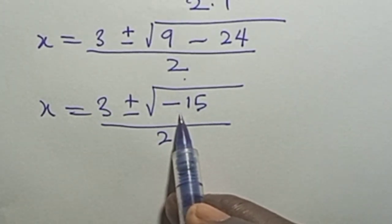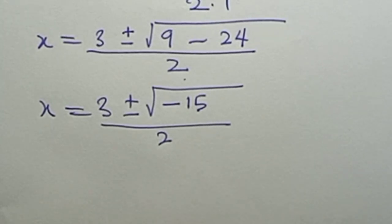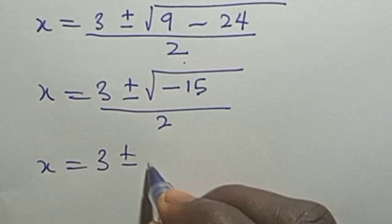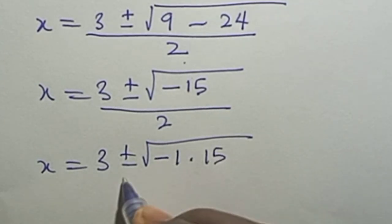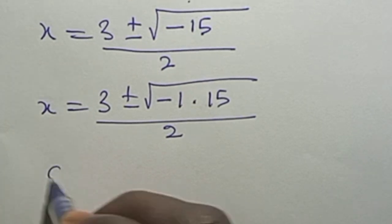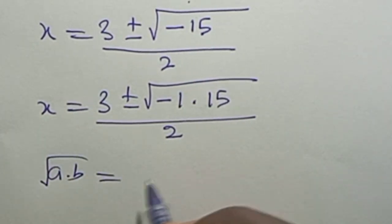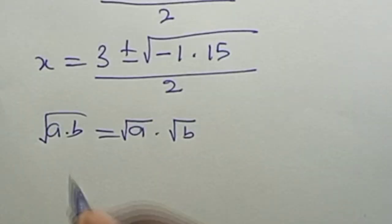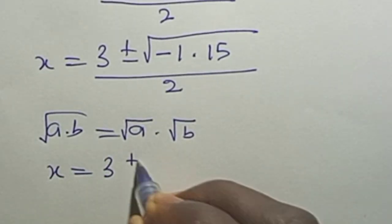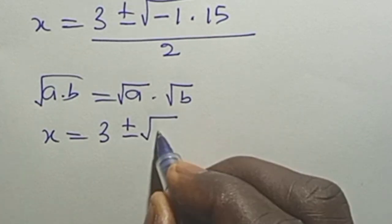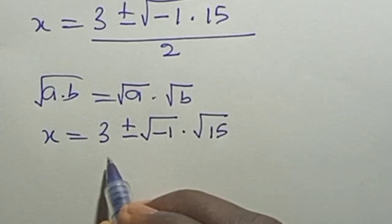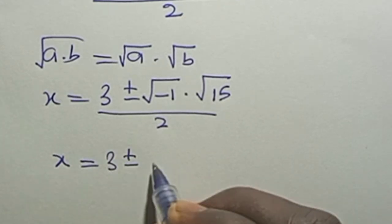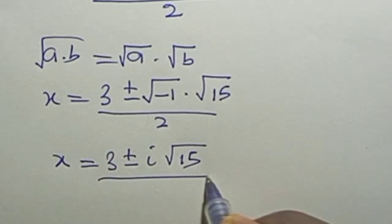The negative under the square root makes this an imaginary number, since it cannot be found on a real number line. We bring in the complex aspect: s equals 3 plus or minus square root of (minus 1 times 15), all over 2. Using the property that square root of (a times b) equals square root of a times square root of b, and since square root of minus 1 equals i, we get s equals 3 plus or minus i times square root of 15, all over 2.